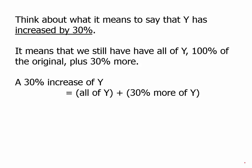All of Y is just Y. For 30 percent of Y, we use the multiplier we already learned — just change the percent to a decimal and multiply, giving 0.3. Notice we can factor out a Y: we have 1 times Y plus 0.3 times Y, so we can factor out Y to get 1 plus 0.3 times Y, or just add those together: 1.3 times Y.